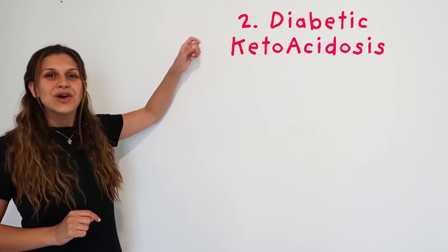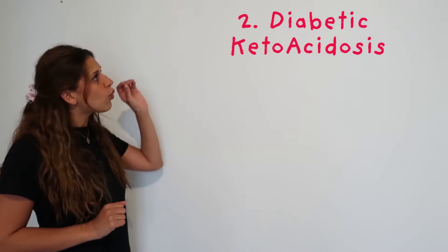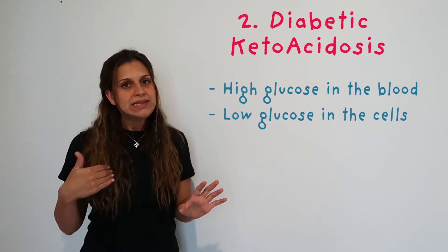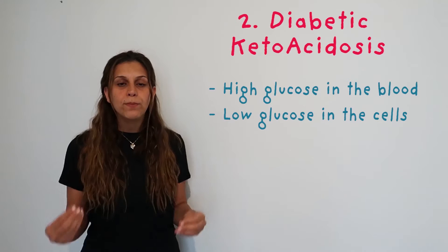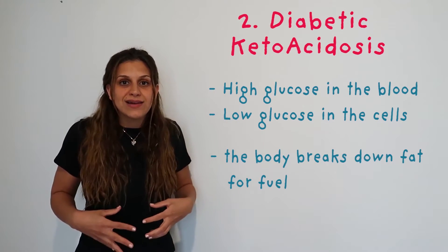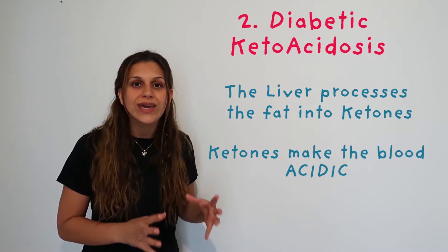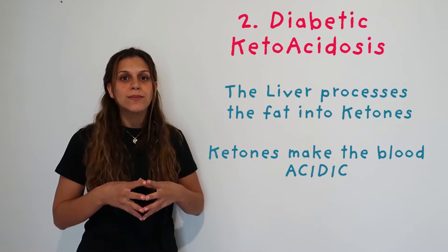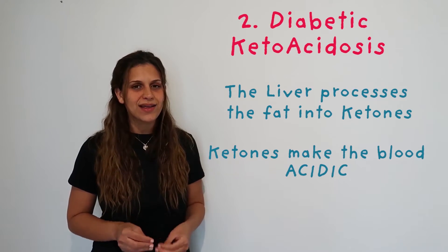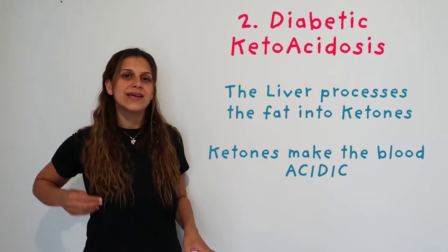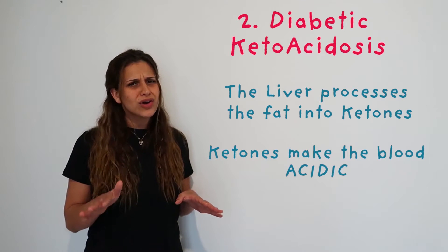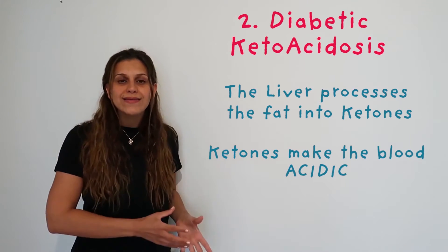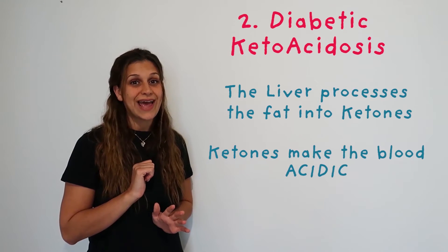The second complication is diabetic ketoacidosis. Because the body has a very high blood glucose level, the glucose stays in the blood and the cells are starving. The body then starts to break down fats — the liver breaks fats down into ketones, which become the fuel to give energy to the body. However, ketones in the blood make the blood very acidic, and acidic blood causes a serious series of complications. Diabetic ketoacidosis is caused by the breakdown of fats into ketones, and ketones cause acid.